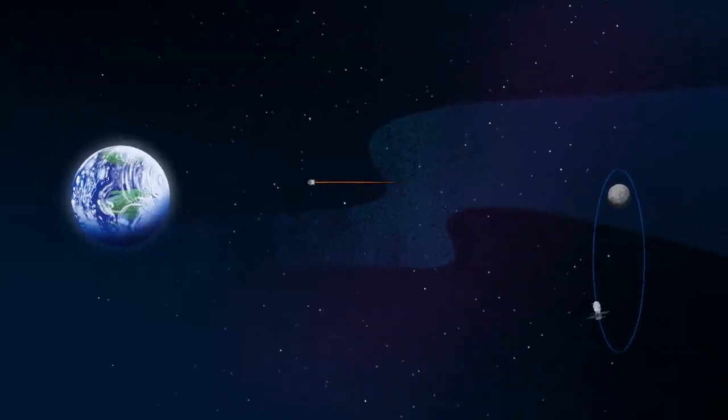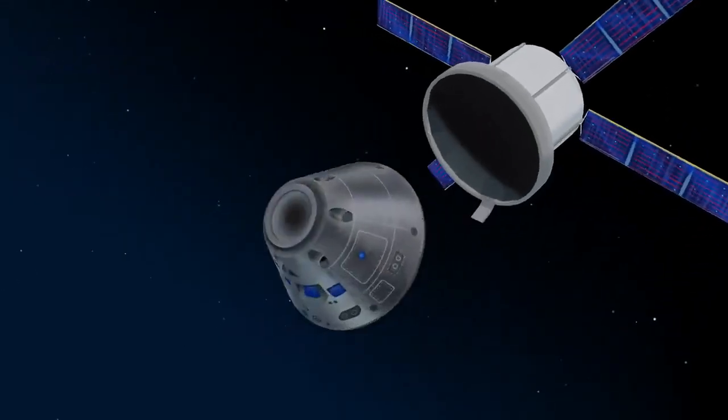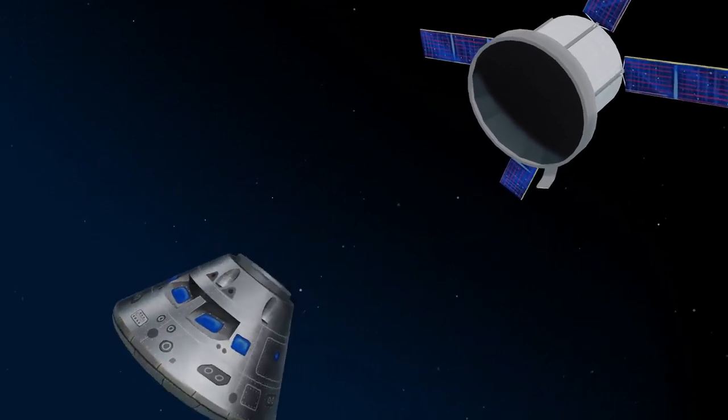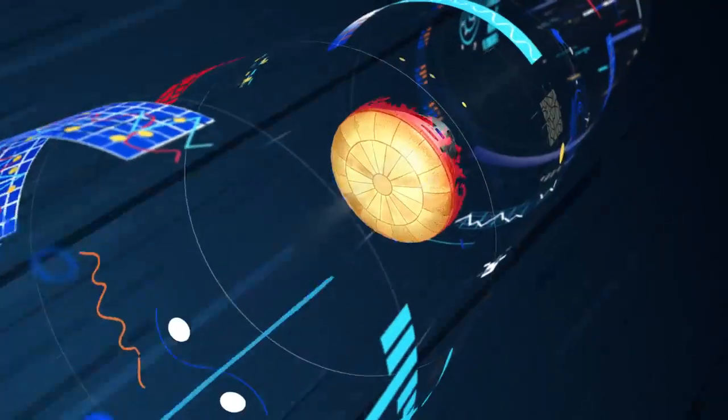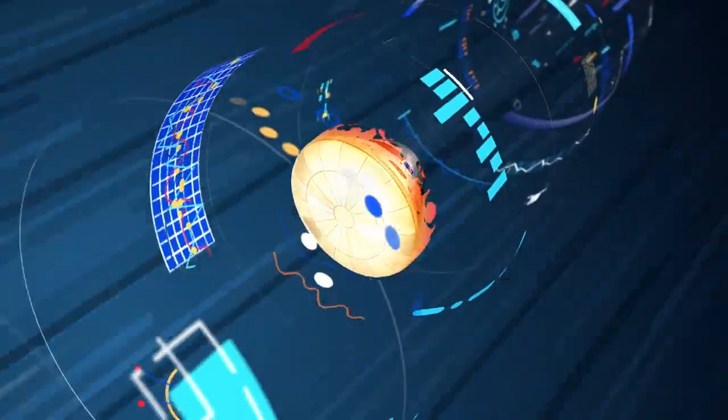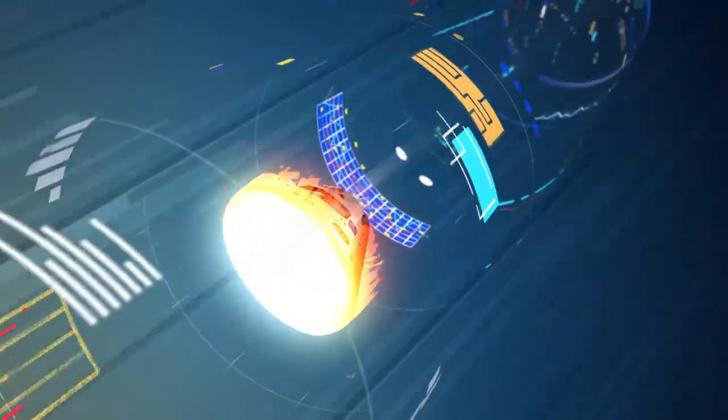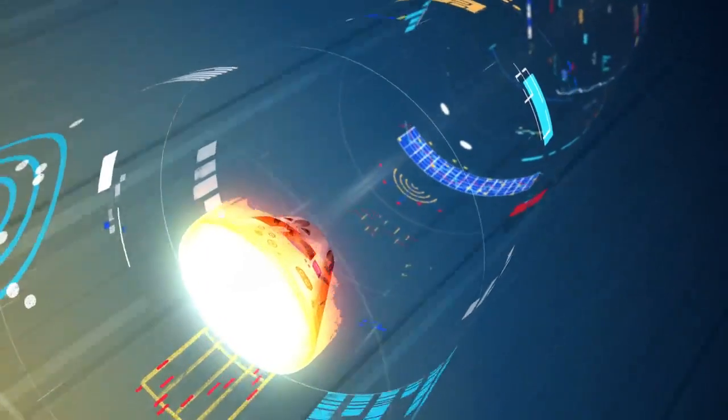As they near the end of this journey, the service module is released, and the crew module is oriented heat shield first. Entering Earth's atmosphere at 25,000 miles per hour, the friction of air slows Orion considerably, while also subjecting it to temperatures of 5,000 degrees.